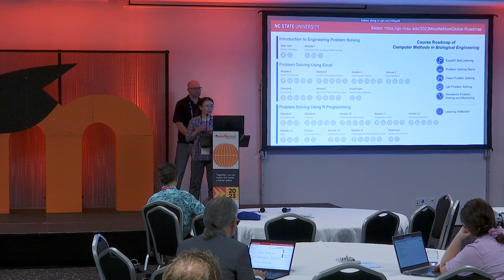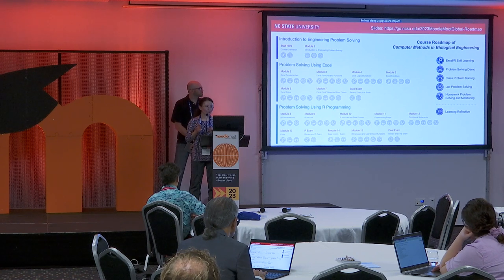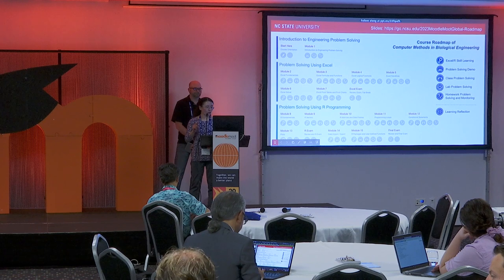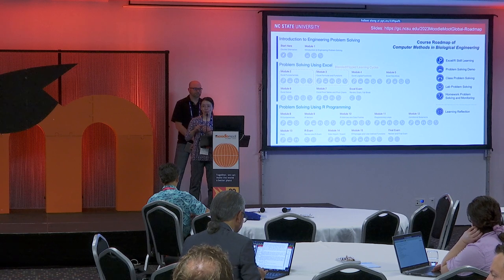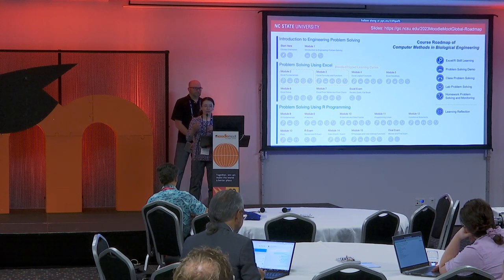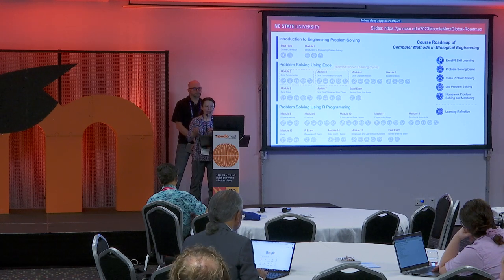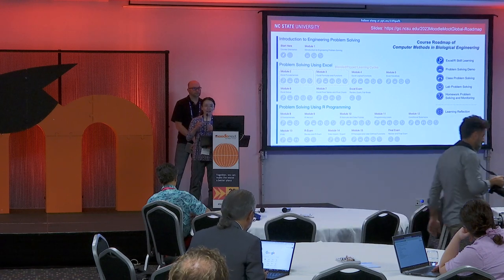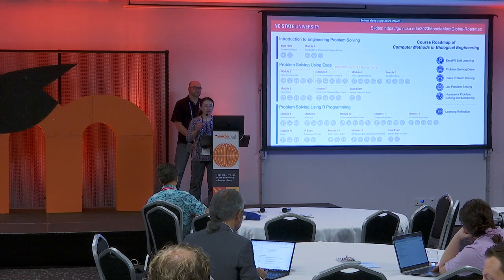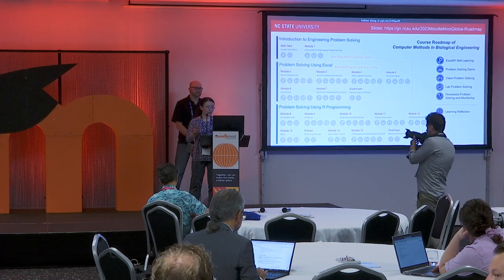This is a bioengineering class that has an introductory phase and then two main phases of using Excel and R to solve bioengineering problems. Each of the main phases has a number of week-long modules and each module has its own blended flipped learning cycle with five learning steps. The first two steps are completed online before class — students first learn the tool functionalities and then watch the instructor's problem-solving demo while following along. Then they come to class in step three to solve a more complex problem with instructor guidance. Steps four and five have students working on problems more independently during lab and in homework. Learning reflection is integrated at the beginning, middle, and end, and monitoring activity is part of the homework problem solving, creating the self-regulated learning cycle for each main phase.